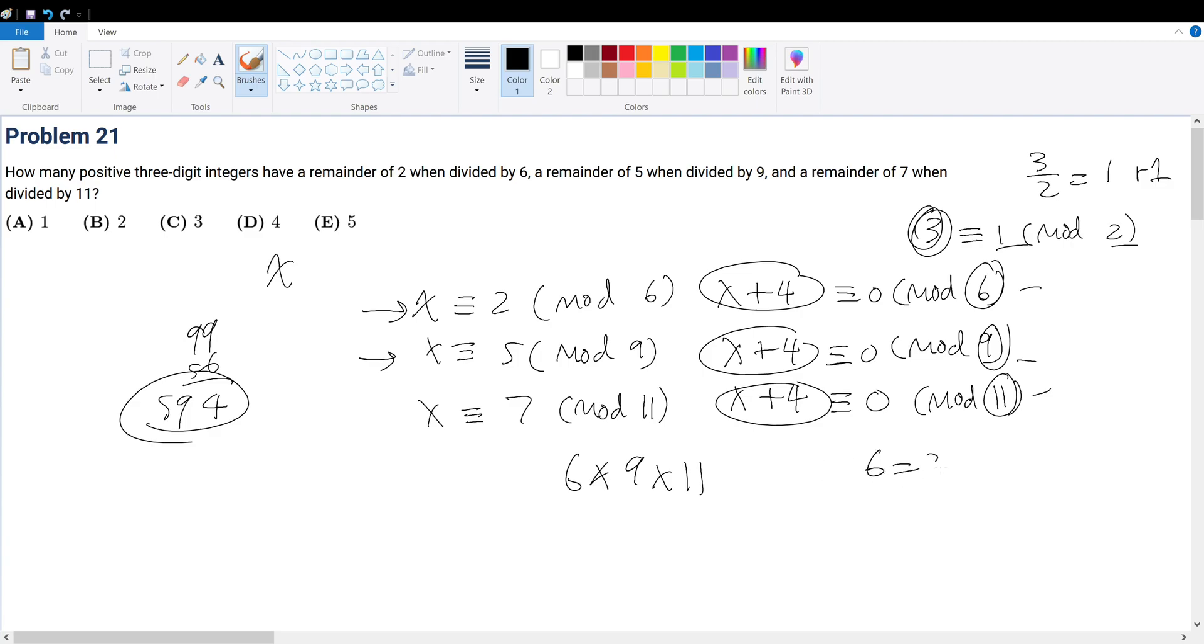So 6 is 2 times 3. 9 is 3 times 3. And 11 is 11. So we have to have 11. We have to have 2 threes and 1 two. So it's 9 times 22, actually. That's equal to 198.